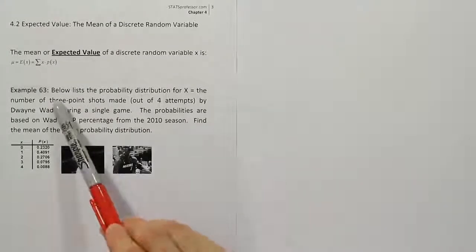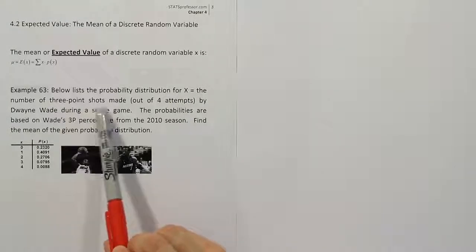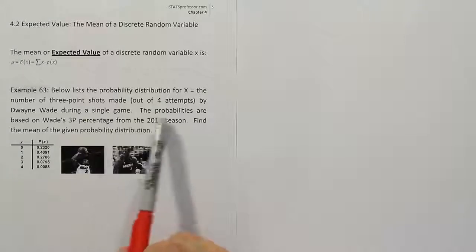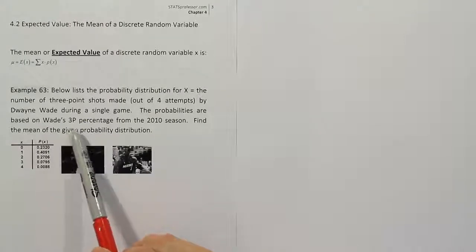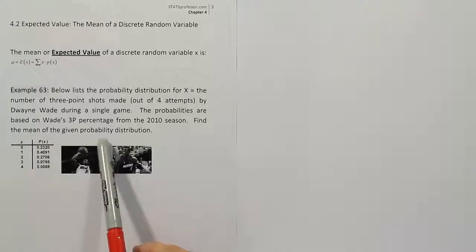Example 63. Below lists the probability distribution for X, which equals the number of three-point shots made out of four attempts by Dwayne Wade during a single game. The probabilities are based on Wade's three-point percentage from the 2010 season. Find the mean of the given probability distribution.